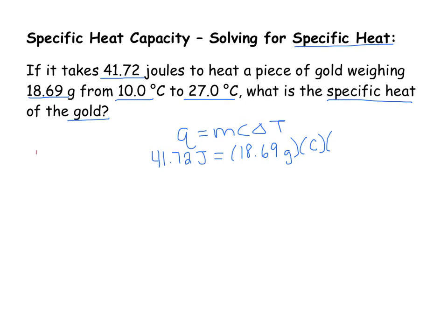Now remember, to solve for delta T, it's always temperature final minus temperature initial. The final temperature here is 27 degrees Celsius minus our initial temperature, which is 10 degrees Celsius. 27 minus 10 is 17 degrees Celsius.